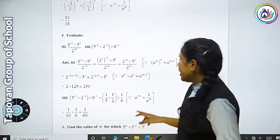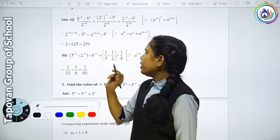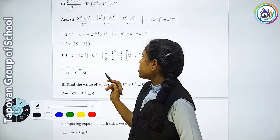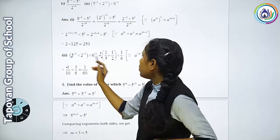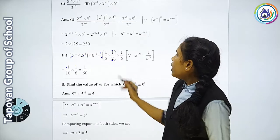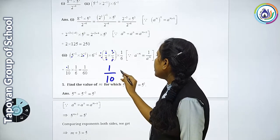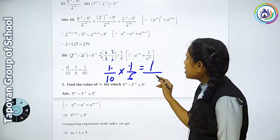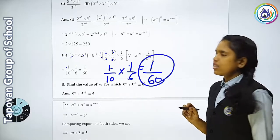Ab bata karte hain second number ki sum ki. 5 raise to minus 1 into 2 raise to minus 1 whole bracket, 6 raise to minus 1. Sabhi ke minus power hai. To 5 ka kya karenge? 1 upon 5. 2 ka kya karenge? 1 upon 2, into 1 upon 6. Ab multiply karlijiye: 1 ones a 1, 5 twos a 10 — yaani 1 upon 10 into 1 upon 6. To 1 ones a 1 and 10 sixes a 60. To answer kitna aaya? 1 upon 60.